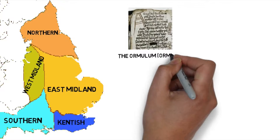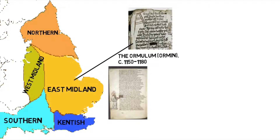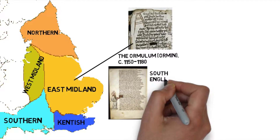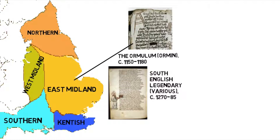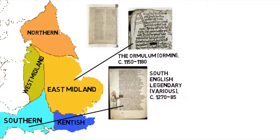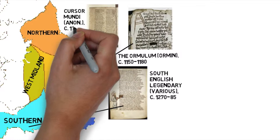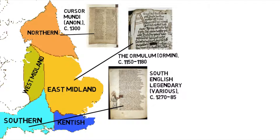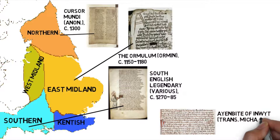The Ormurum, which dates from the second half of the 12th century, is an example of the East Midland dialect, while the South English Legendary, a compilation of the Lives of Saints written in the late 13th century, is an example of the Southern dialect. The Northern dialect is exemplified in Cursor Mundi, a historical and religious poem written around 1300. A translation of a French work entitled Ayenbite of Inwyt, meaning Remorse of Conscience, appeared in 1340 and is an example of the Kentish dialect.